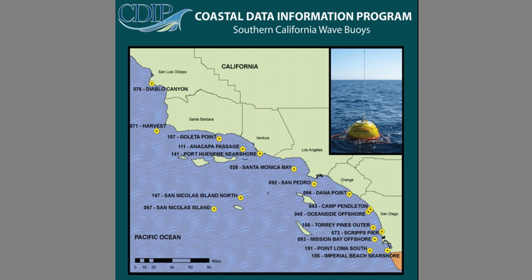We're back now talking about the CDIP, the Coastal Data Information Program, and the Southern California Wave Buoys. One of the most important of these buoys is called the Harvest Buoy. It's off of Point Conception, this big corner of the coastline just west of Santa Barbara. The Harvest Buoy is exposed to swells from all directions in the Pacific Ocean, so it's very useful for helping us predict what's happening to waves as they come into the Southern California coastline.